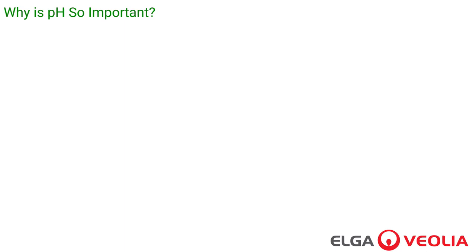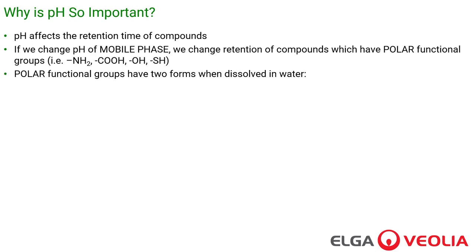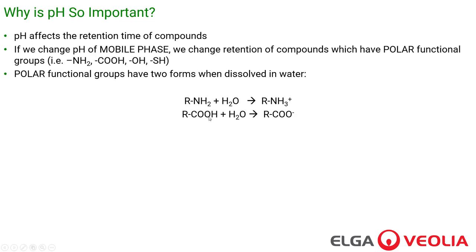Why is pH so important? pH affects the retention time of compounds. If we change the pH of the mobile phase, we change the retention of compounds that have polar functional groups. Polar functional groups have two forms when dissolved in water: an uncharged form and a charged form. A base takes an H+ from solution, sticks it on, and becomes positively charged. An acid does the opposite — it donates its H+ into the water and leaves a negatively charged substance behind.